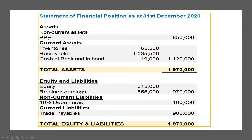Now let's move on to the question. We are given a financial position as at 31st December 2020. Based on the information provided, let's calculate the gearing ratio as well as the leverage ratio. First, we need to identify the debt — in this case the non-current liability: 10% debentures of 100,000. This is the debt.